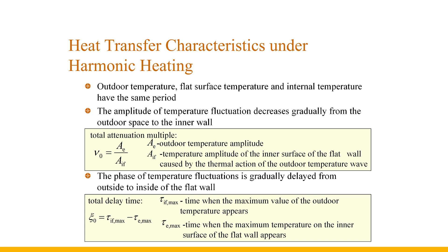The flat wall has the following heat transfer characteristics under harmonic heat. First, outdoor temperature, flat wall surface temperature, and internal temperature are all harmonic quantities of the same period, expressible by harmonic quantities. Second, from the outer surface to the inside of the flat wall, the temperature fluctuation amplitude gradually decreases — a phenomenon called temperature fluctuation attenuation. The total attenuation multiple refers to the ratio of the outdoor temperature amplitude to the temperature amplitude of the inner surface caused by the outdoor temperature wave.